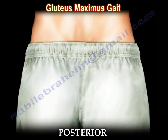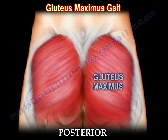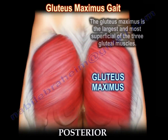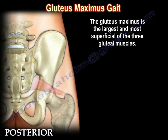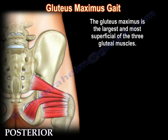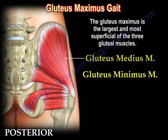This is the Gluteus Maximus muscle. It is the largest and the most superficial of the three gluteal muscles. The other two muscles are the Gluteus Medius and Minimus.